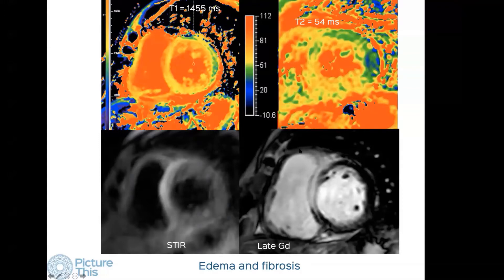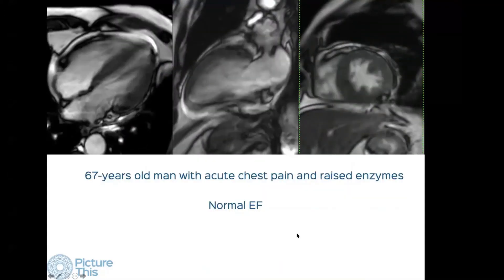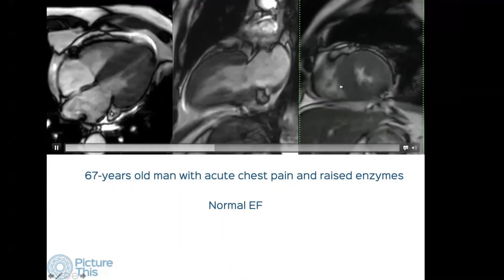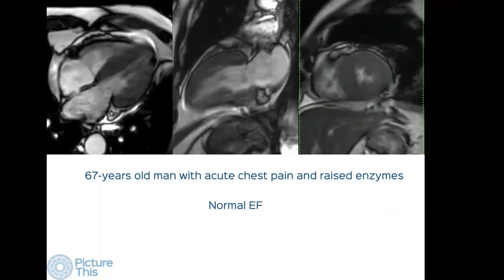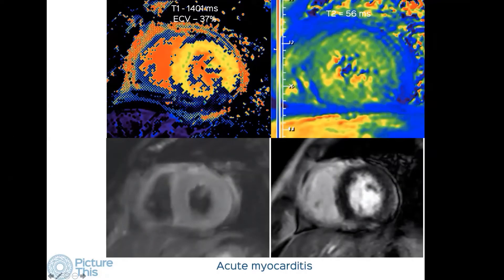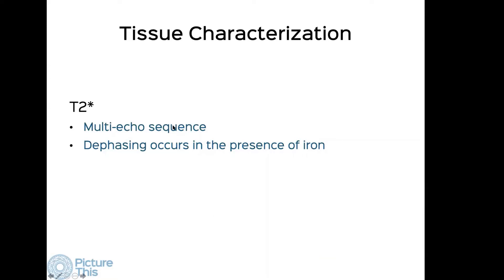Here is a 67-year-old with acute chest pain, raised troponin levels, and normal ejection fraction. On the four-chamber, two-chamber, and short axis views, contractility and thickening are normal. The T1 map is high, the T2 map shows high values, the STIR image shows only mild diffuse increased signal, and there is no late gadolinium enhancement. So there is edema but no fibrosis and no infarction — giving us a diagnosis of acute myocarditis.